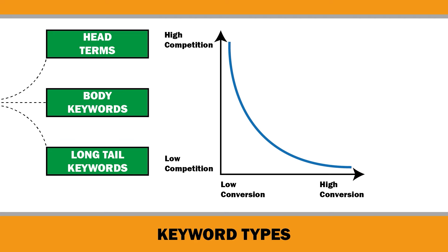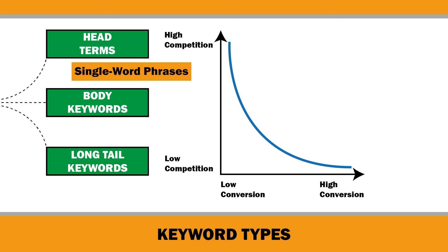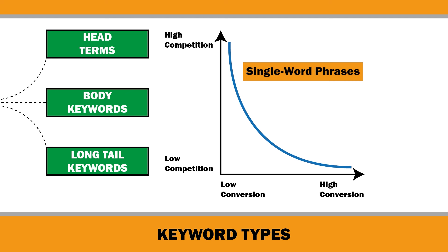Head terms are typically single word keywords that have a high search volume and competition. For KDP low content books, examples of head terms include notebooks or journals. However, because the customer's search intent is not always clear, head terms usually don't convert to sales very well. For instance, someone searching for notebooks might be looking for a composition notebook, graph paper notebook, or blank notebook.